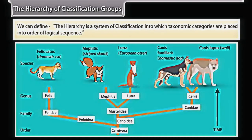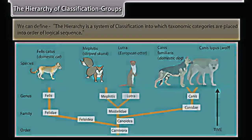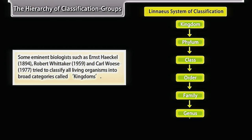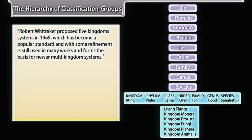The hierarchy is a system of classification in which taxonomic categories are placed in an order of logical sequence. Some eminent biologists — Ernst Haeckel (1894), Robert Whittaker (1959), and Carl Woese (1977) — tried to classify all living organisms into broad categories called kingdoms. Robert Whittaker proposed the Five Kingdoms System in 1969, which has become a popular standard and with some refinement is still used in many works.